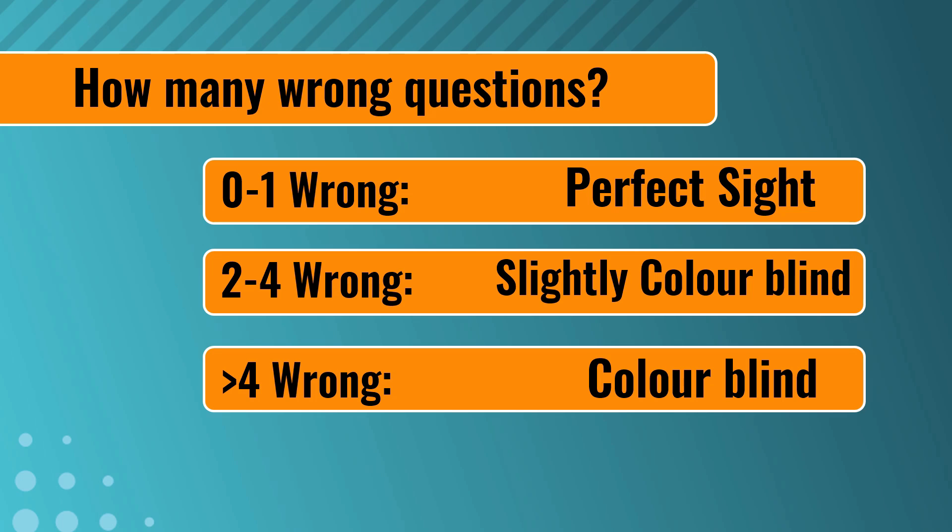If you got 0 to 1 questions wrong, you may have perfect sight. If you got 2 to 4 questions wrong, you may be slightly color blind. And if you got more than 4 questions wrong, you probably have color blindness.